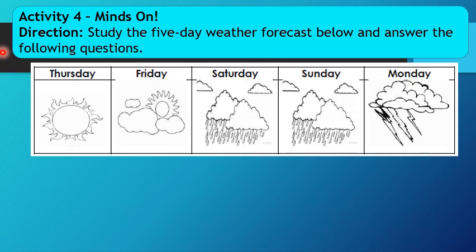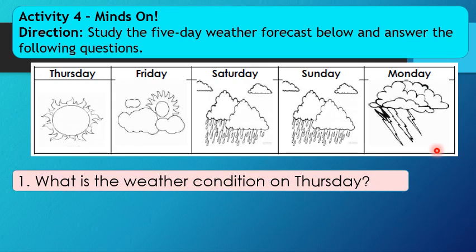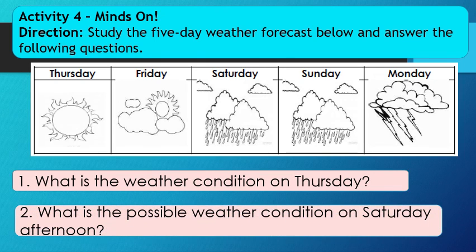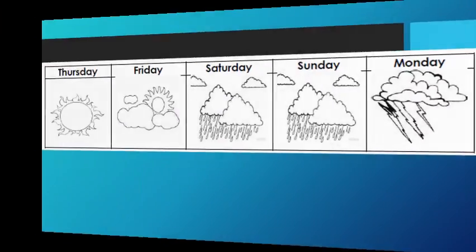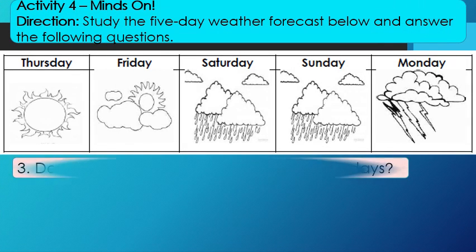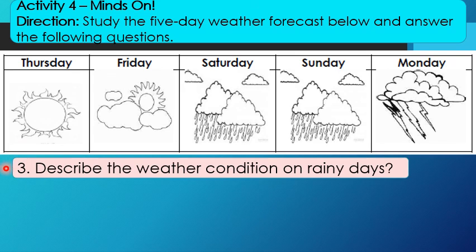Now let's have some activities. Let's continue the activities from last week — Activity 4, Minds On. Study the 5-day weather forecast below and answer the following questions. Question 1: What is the weather condition on Thursday? Question 2: What is the possible weather condition on Saturday afternoon? Question 3: Describe the weather condition on rainy days.